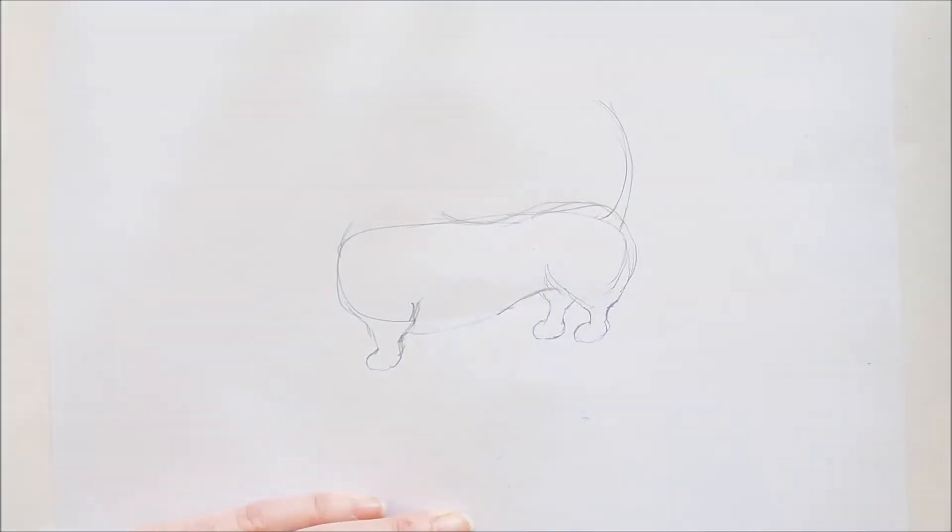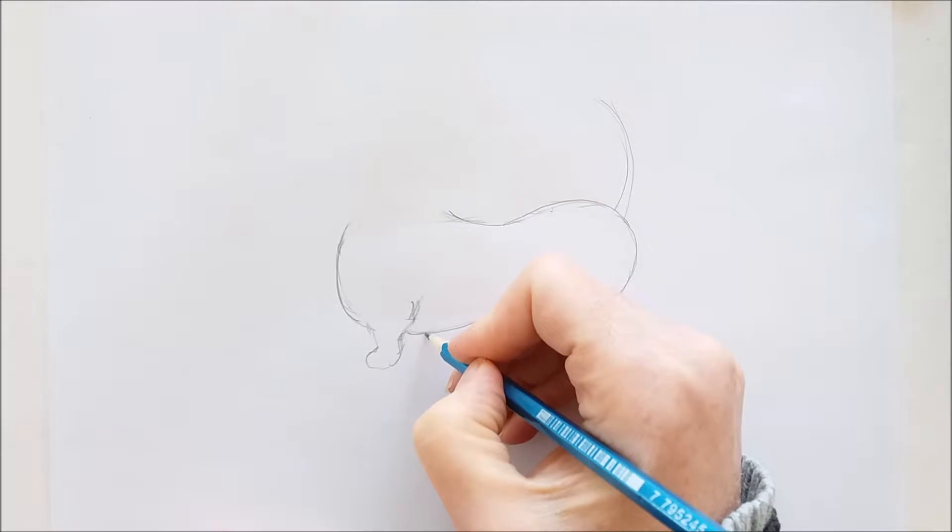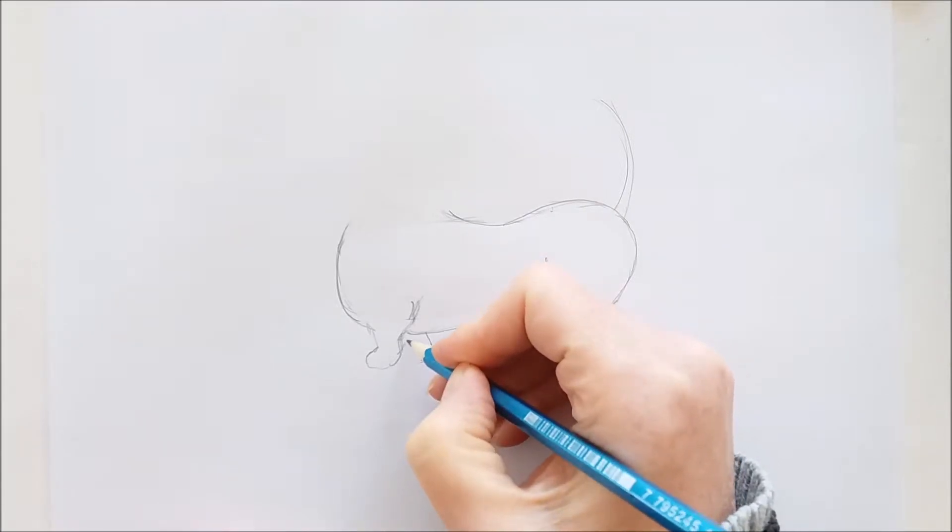And then once we have that all done I'm just going to add in this last paw which again are two little short lines and a ball shape for the foot.